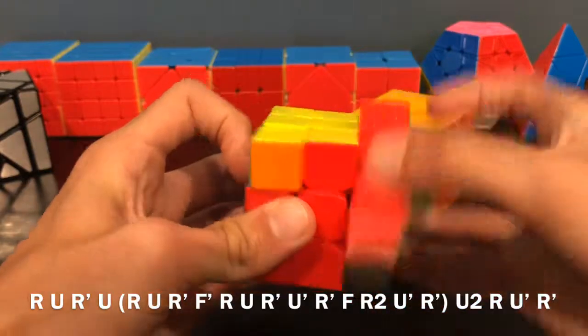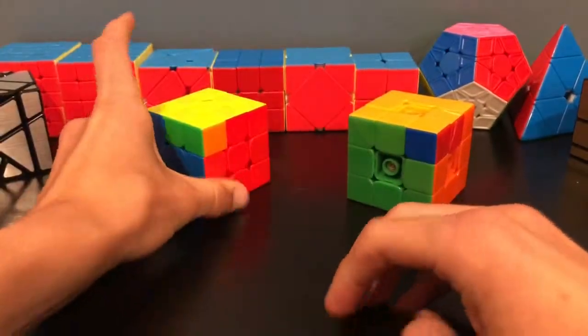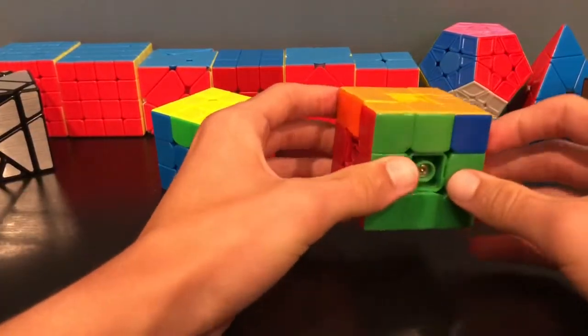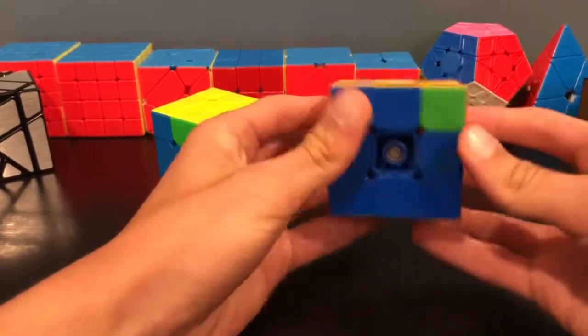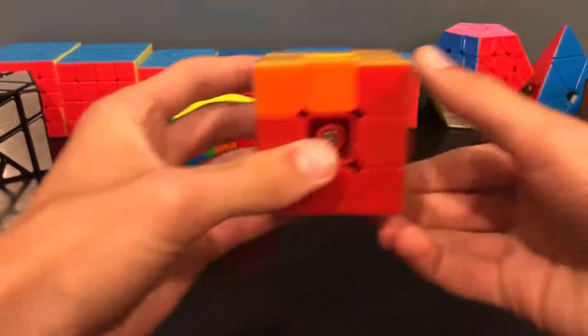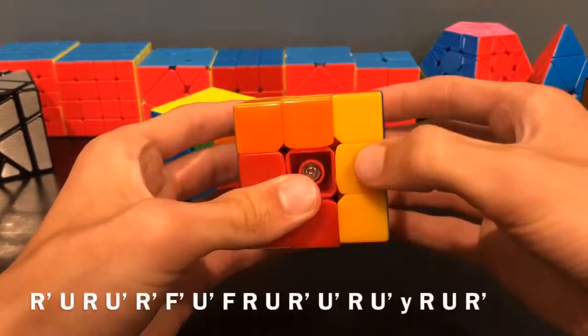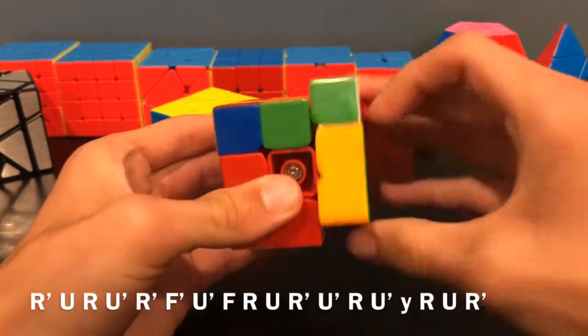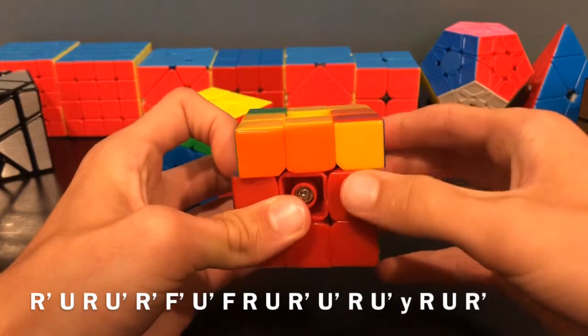Now for Nb, it's a little bit different. Once again, this is symmetrical—you can just position anywhere, and you'll do this algorithm: R prime U R U prime R prime.